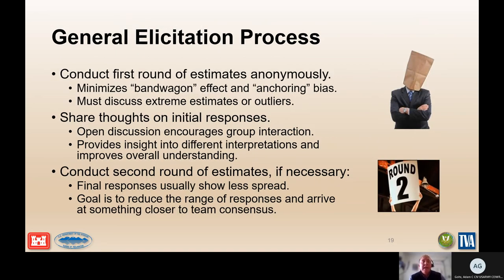During the elicitation process, each team member should write down their estimate to force independent thinking and avoid bias from hearing other responses. Facilitators then collect and review the estimates. Although the first round is submitted anonymously, outliers must be discussed after all estimates are collected, which means no more anonymity. One team member may have a totally different interpretation of the data or expected performance, and it is important for the team to understand why. A second round of elicitation should be conducted if necessary to arrive at team consensus.